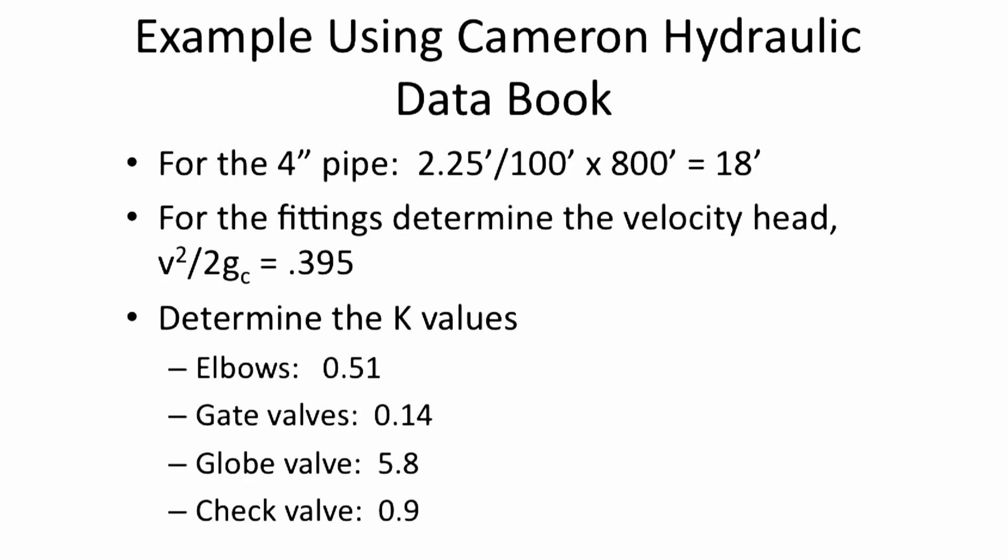From the book, for a 4-inch new steel pipe at 200 gallons per minute, the friction loss is 2.25 feet per 100 foot of pipe. So you multiply this by the 800 feet of pipe, and you have 18 feet of pressure drop.